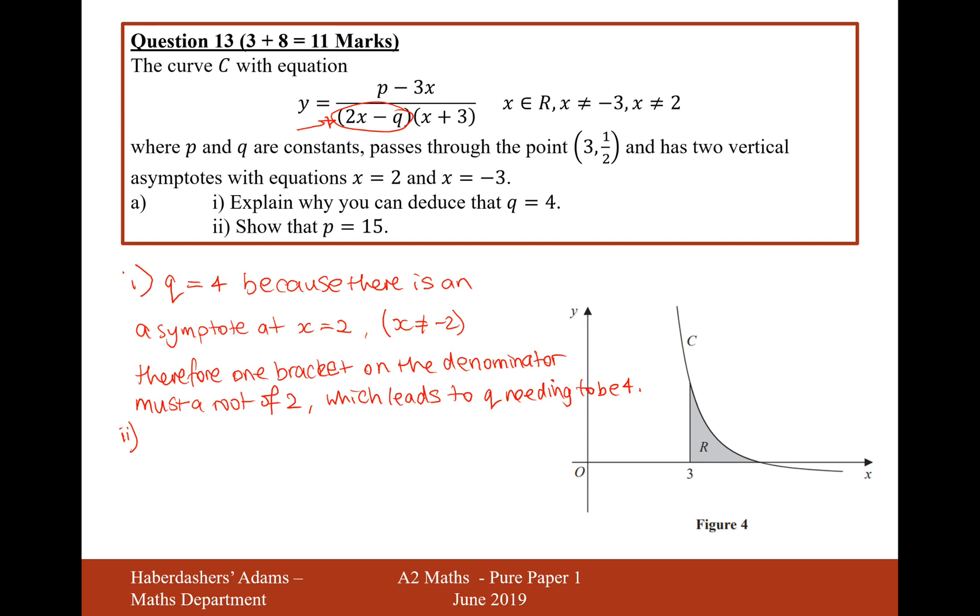And then part b is show that p is equal to 15, where it's probably going to have to be something to do with this coordinate here. So when x equals 3, I'm going to carry on using that q is equal to 4 here. It's going to be y equals p minus 3 times 3 is 9 over 3 times 2 times 3 is 6 minus the 4 is 2 times, and then 3 plus 3 is 6, that's going to equal a half. If I then times the 12 onto the other side, I get p minus 9 equals 6. And then add the 9 onto the other side, and I get p equals 15.